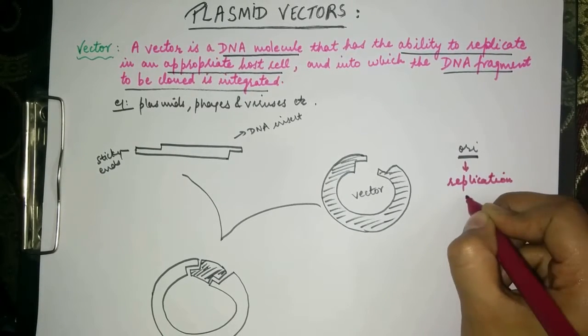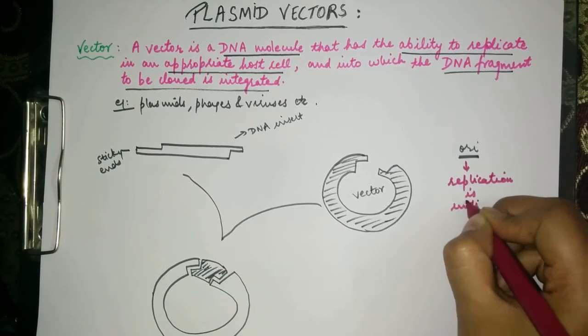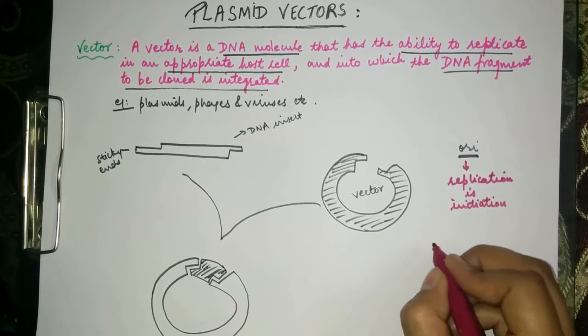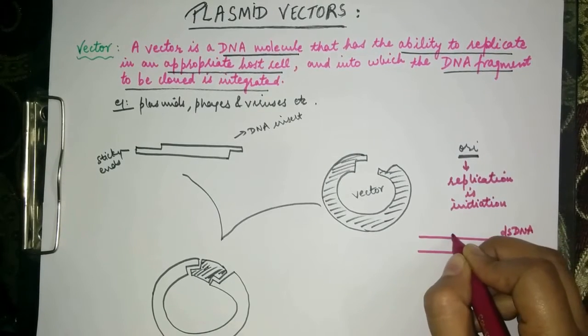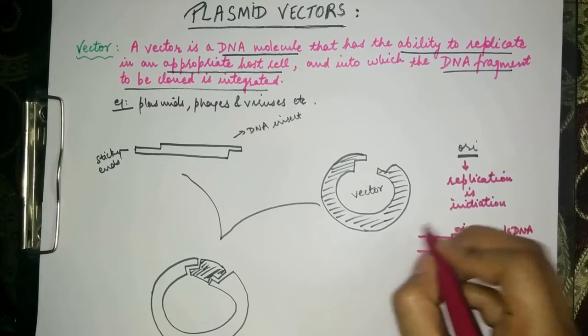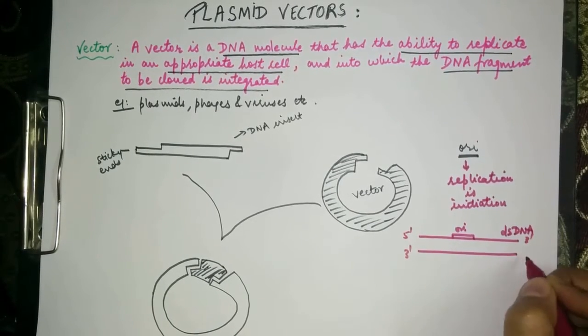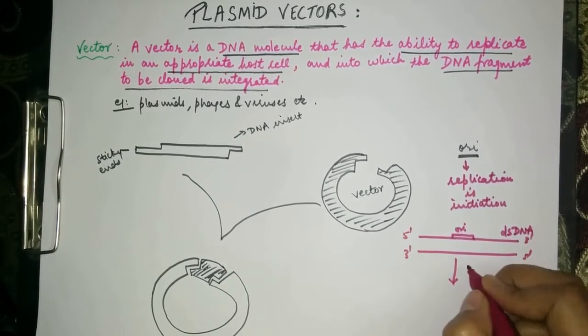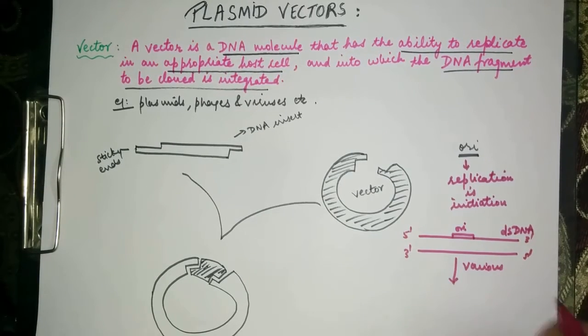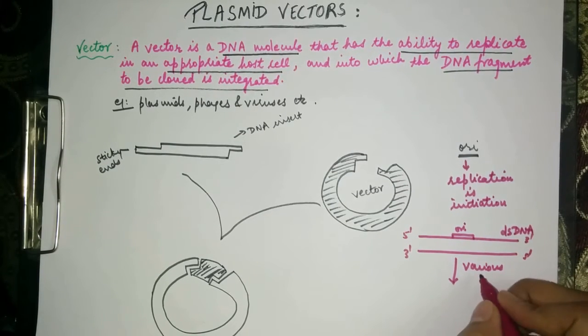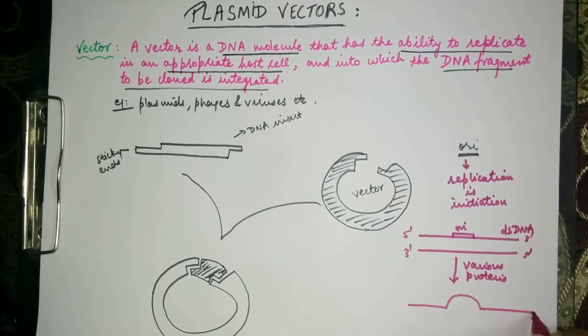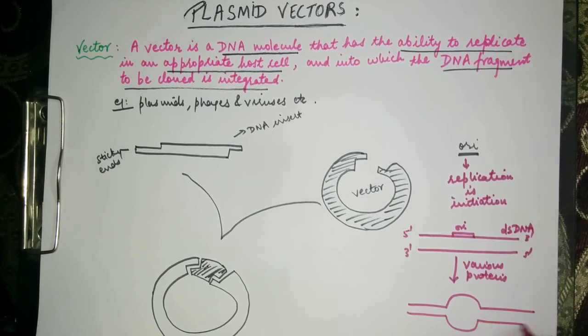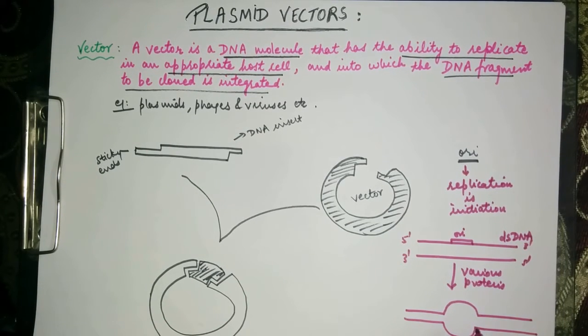This will become clear from this figure. Suppose this is a double-stranded DNA molecule and here is the origin of replication. This is the five prime and three prime, three prime five prime. And when certain proteins act on this double-stranded DNA, it will form single-stranded templates of this DNA and from here the DNA is ready to replicate.